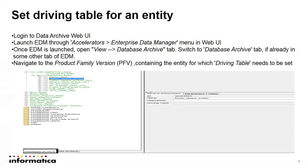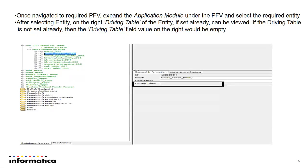Here are the steps to set the driving table in an entity. Login to the web UI. Launch the EDM from Accelerator's Enterprise Data Manager. Go to the View Data Archive tab in EDM. Switch to the Database Archive tab. Then select the product family version containing the entity for which the driving table needs to be set. Once you have navigated to the product family version, expand the application module under the product family version.